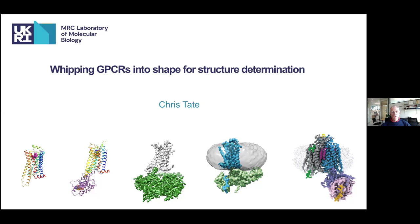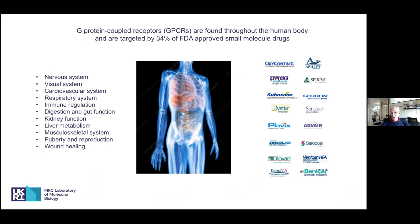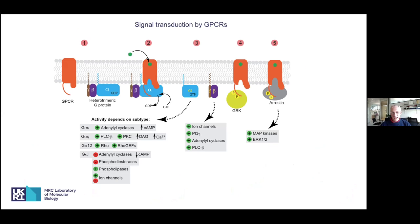I want to give a brief introduction to GPCRs. You understand they're really important for drug discovery — 34% of all FDA-approved drugs target GPCRs. The important thing to recognize is how dynamic they are, which has been really instrumental in understanding how you can get structures. If you understand the dynamics a protein undergoes, you're in a far better position to engineer it and get structures.